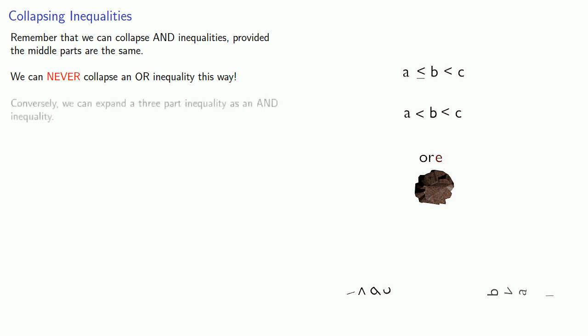So these two inequalities have a rock in between them that will keep you from joining them. Now the other side of this is we can expand a three-part inequality as an AND inequality. So this A less than or equal to B strictly less than C becomes A less than or equal to B and also B strictly less than C.